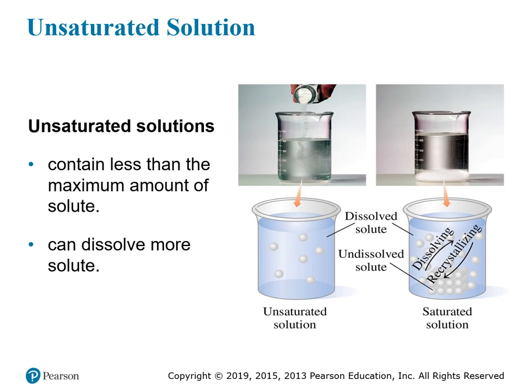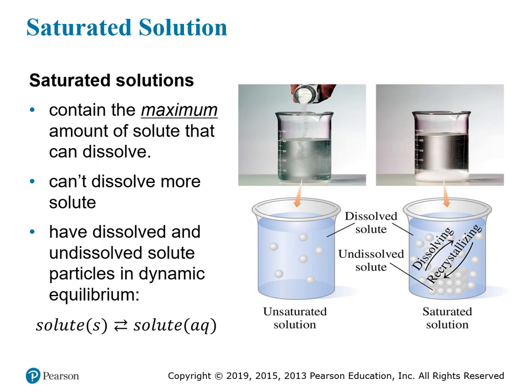This solubility limit separates two different types of solutions. Before you reach the limit, you have an unsaturated solution — if you have less than the maximum amount of solute, the solution is unsaturated. It can still dissolve more solute particles; if you pour more in, they would dissolve. On the left-hand side, you can see an unsaturated solution where all the particles are dissolved and new salt continues dissolving.